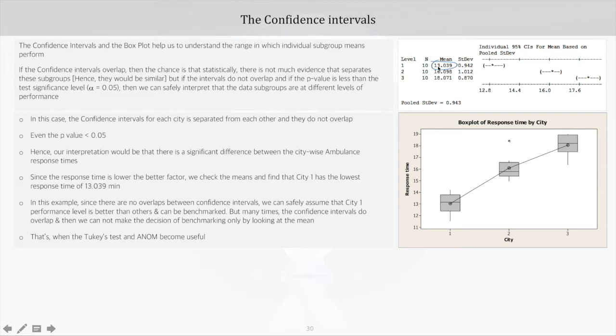And hence it can be benchmarked. But a word of caution is that many times, actually most of the times, the confidence intervals do overlap, and then we cannot make the decision of benchmarking only by looking at the mean. Then in such cases, how do we make this decision around the benchmarking? That's when the Tukey's test and ANOM, which is Analysis of Means, become useful.